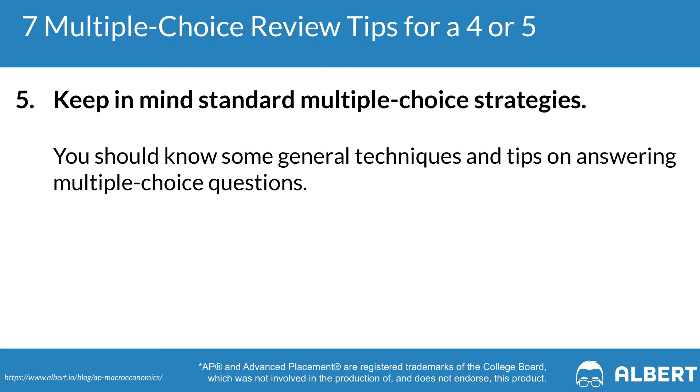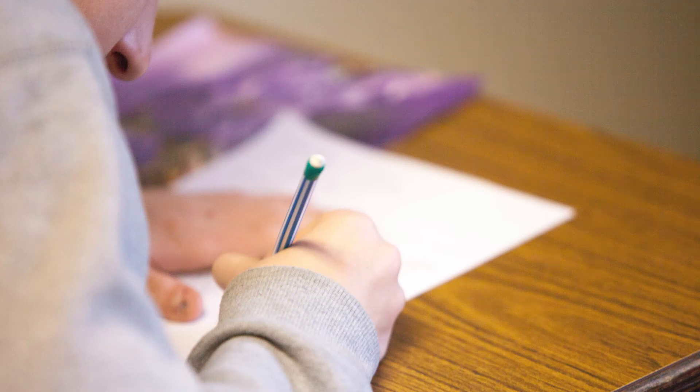Tip number five is to keep all the standard multiple choice tips and tricks in mind. This means answering every single question, deciding in advance which letter you'll guess when you're short on time so you stay consistent, and using the process of elimination. Also think about how information given to you in one question might help you answer a later question. Watch out for keywords like 'except' or 'not,' and actively mark up your test — circle things, underline things, or leave notes in the margin to help you understand what happened in that question the first time you answered it.